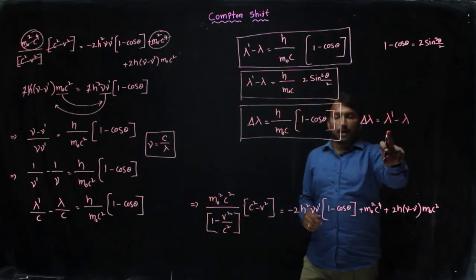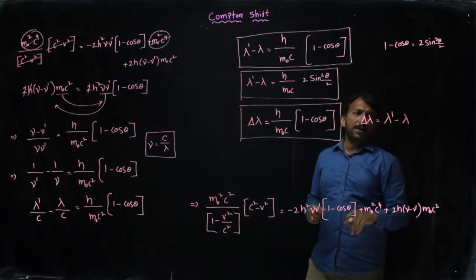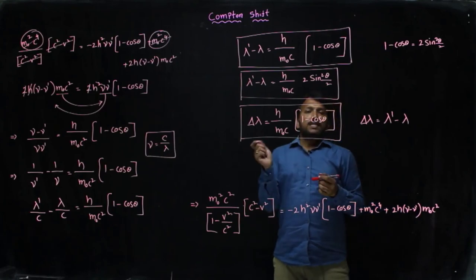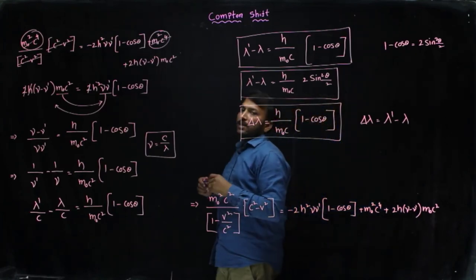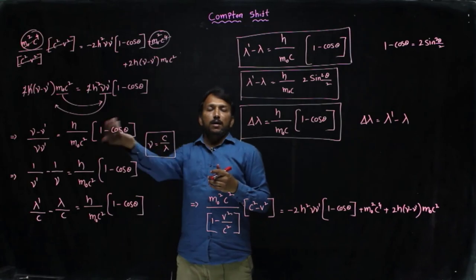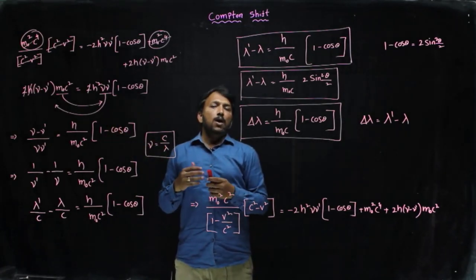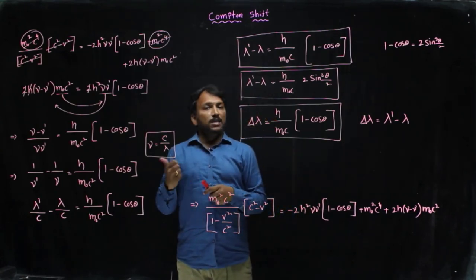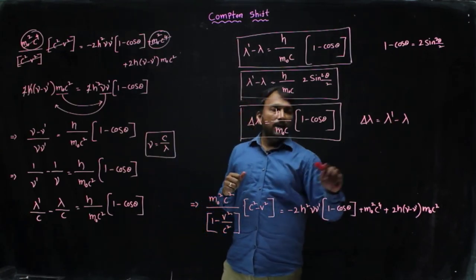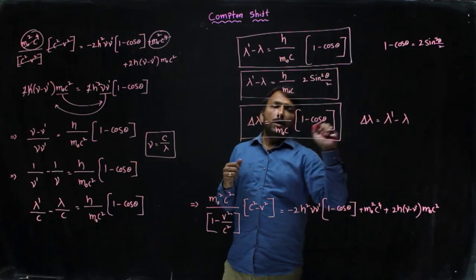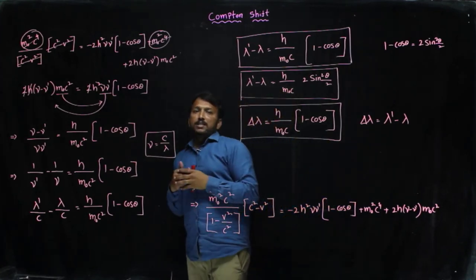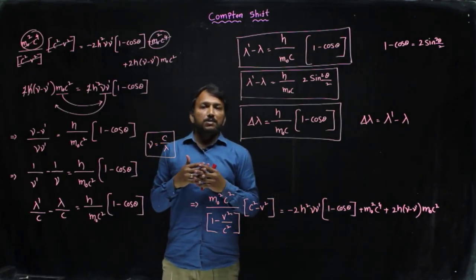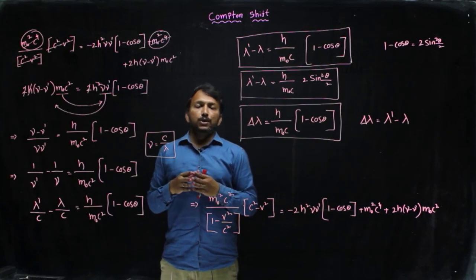So this is the required expression for the Compton shift, where Δλ = λ′ − λ. Here λ′ is the modified component and λ is the unmodified component. When X-rays are incident on the electron at rest, the scattered X-rays consist of two wavelengths: one higher than the incident (λ′) and one the same as the incident (λ). The difference between the modified and unmodified components is called the Compton shift. Thank you for watching this video; please subscribe to the channel and share with your friends.